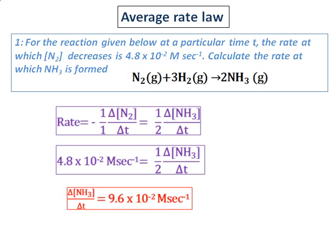Substituting the values, I get 4.8 times 10 to the power of negative 3 equals one half of the change in concentration of ammonia divided by delta T. Hence, the rate at which ammonia is formed is 9.6 times 10 to the power of negative 3 molar per second. You can see that from the equation, the rate at which ammonia is formed is twice the rate at which nitrogen decreases.